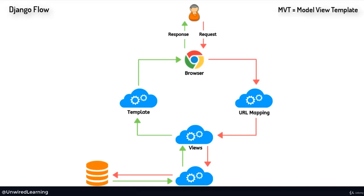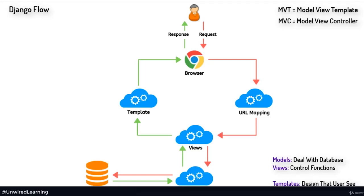So if I talk about MVT: Model is related to databases; View is related to the functionality and code that we write; and Template relates to the front-end part — how our website is going to look. So the first two points relate to our database and functionalities — that is our back-end part — and Template works with the front-end part. All three are really important to work on a website. Now I also want to add a C, so it is CMVT — controller/configuration/mapping, then Model, then View, then Template.